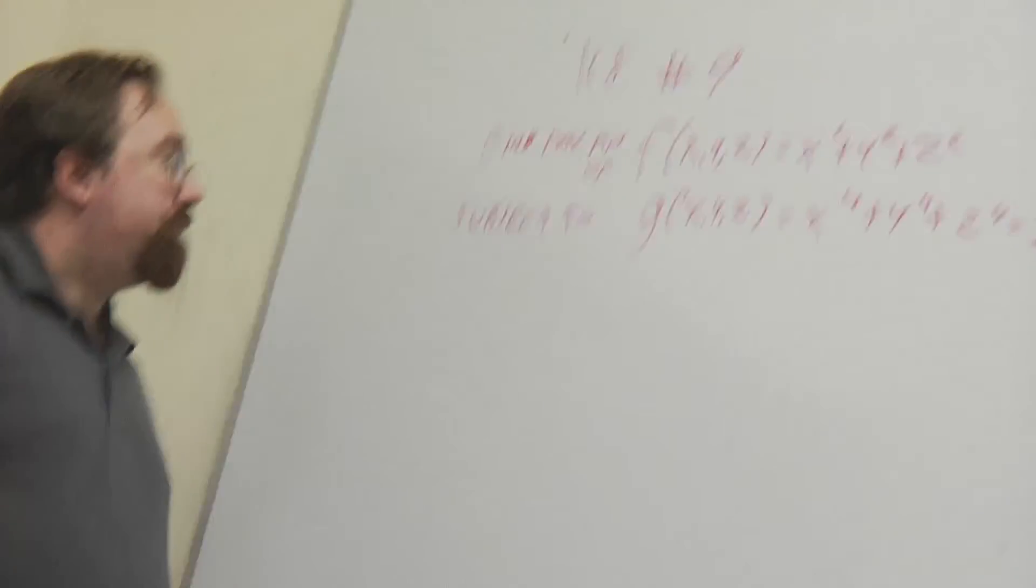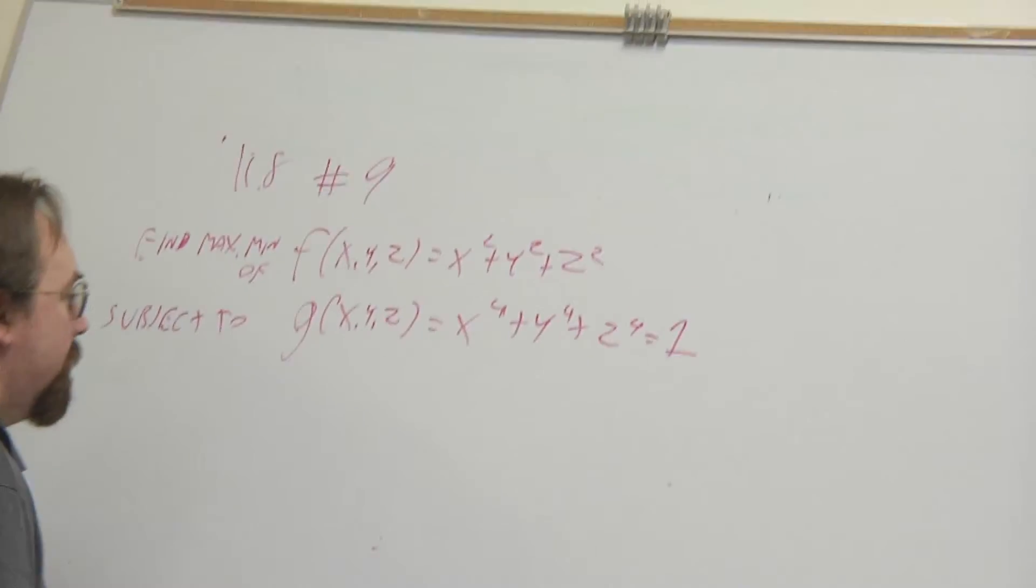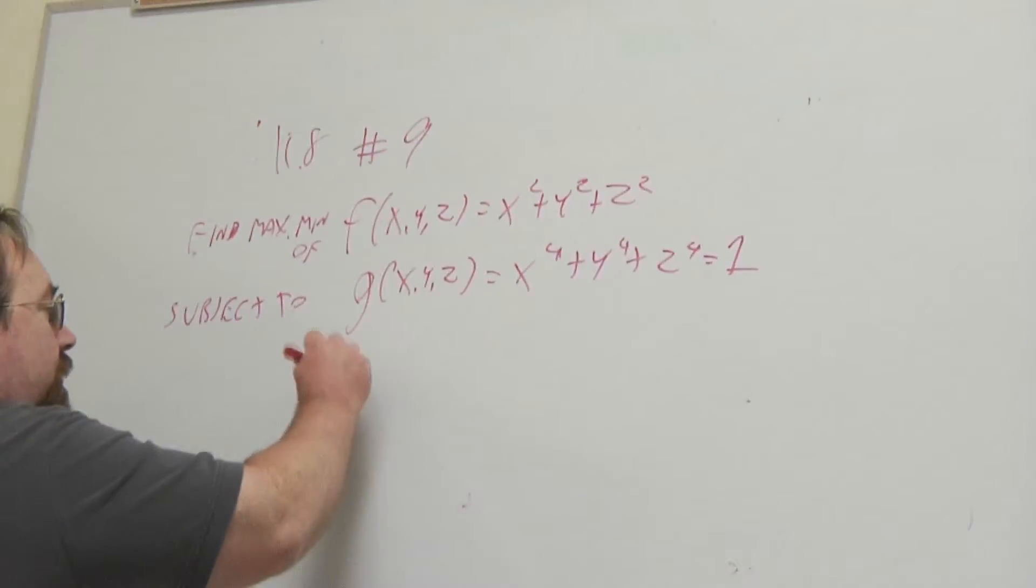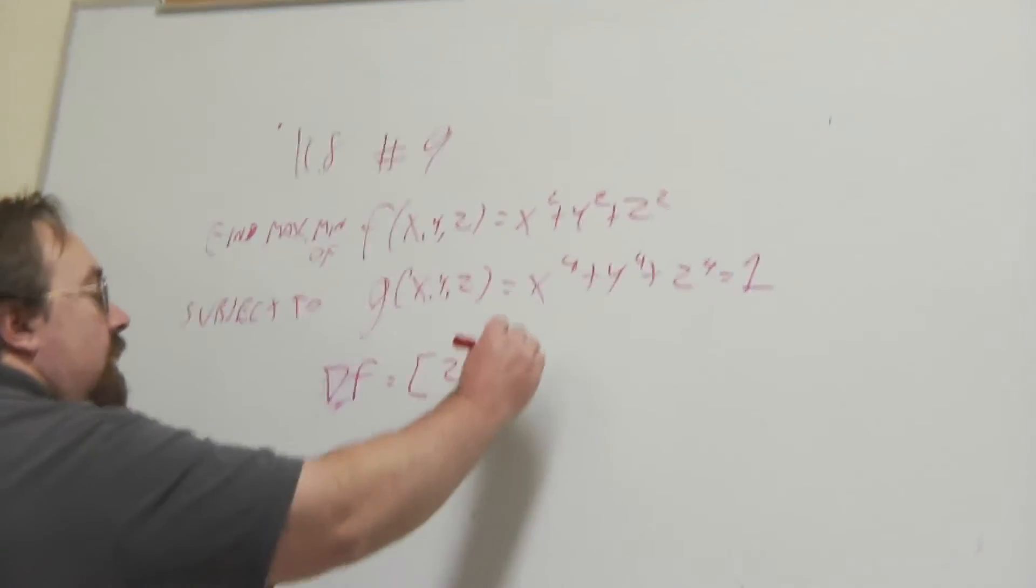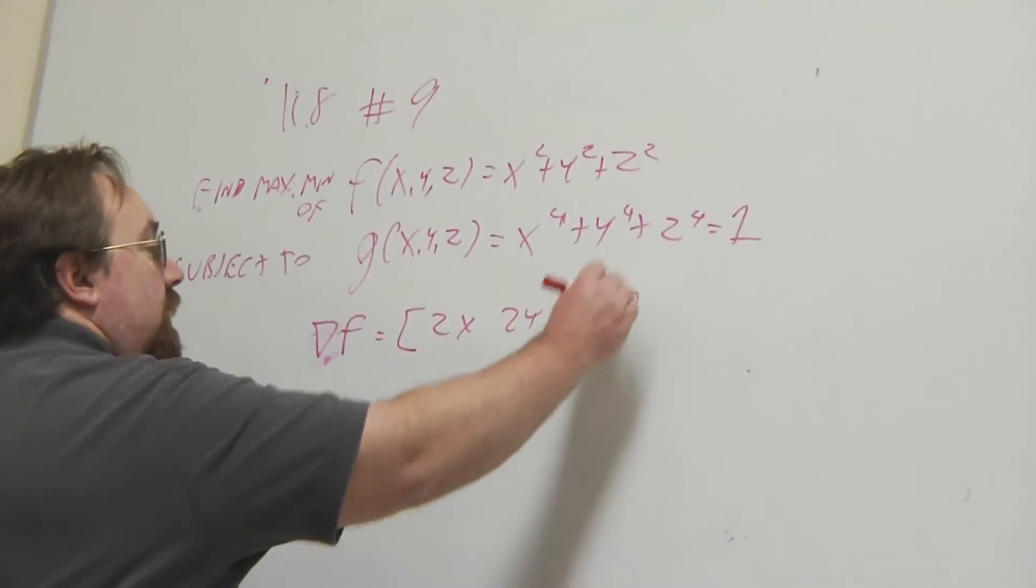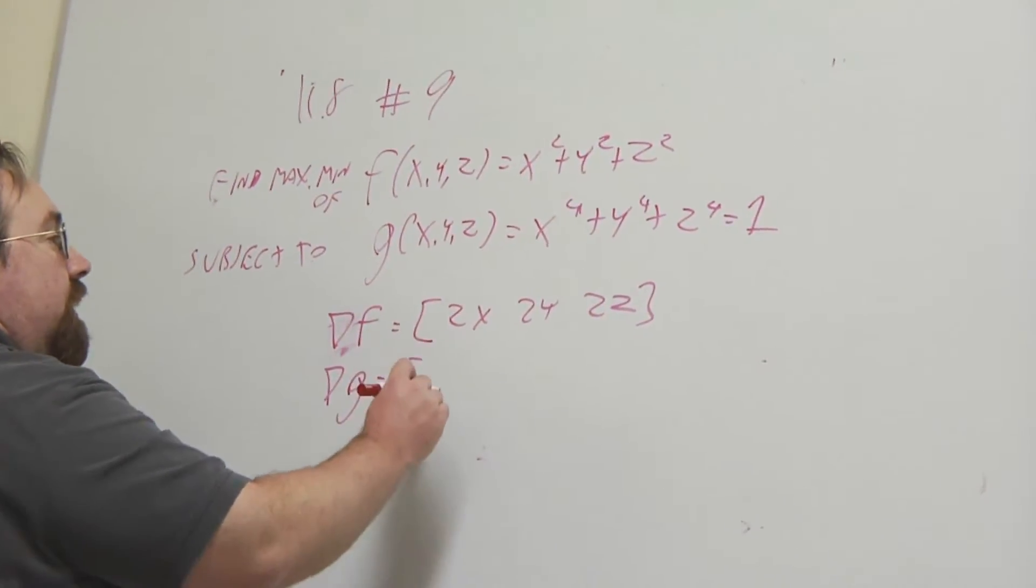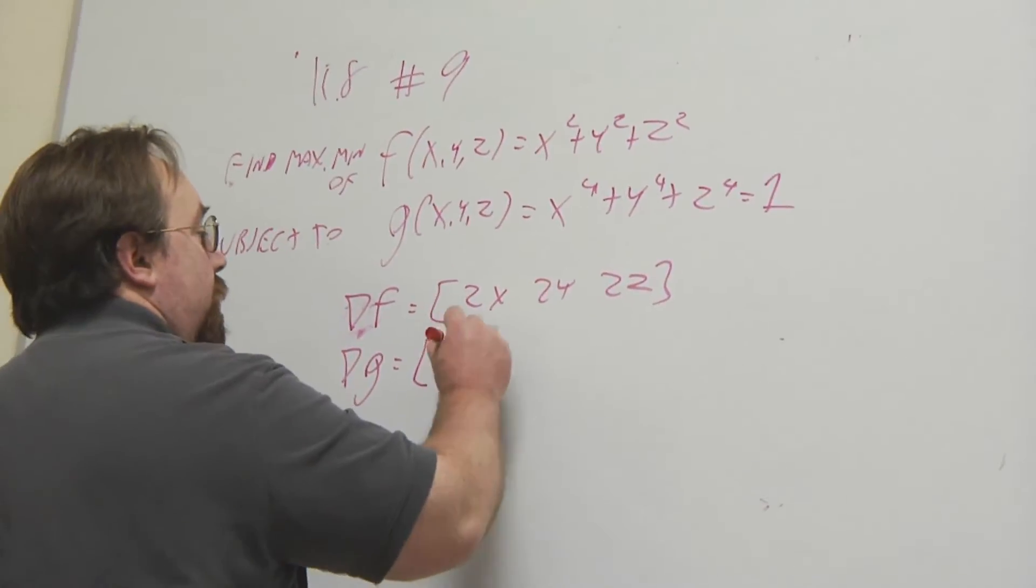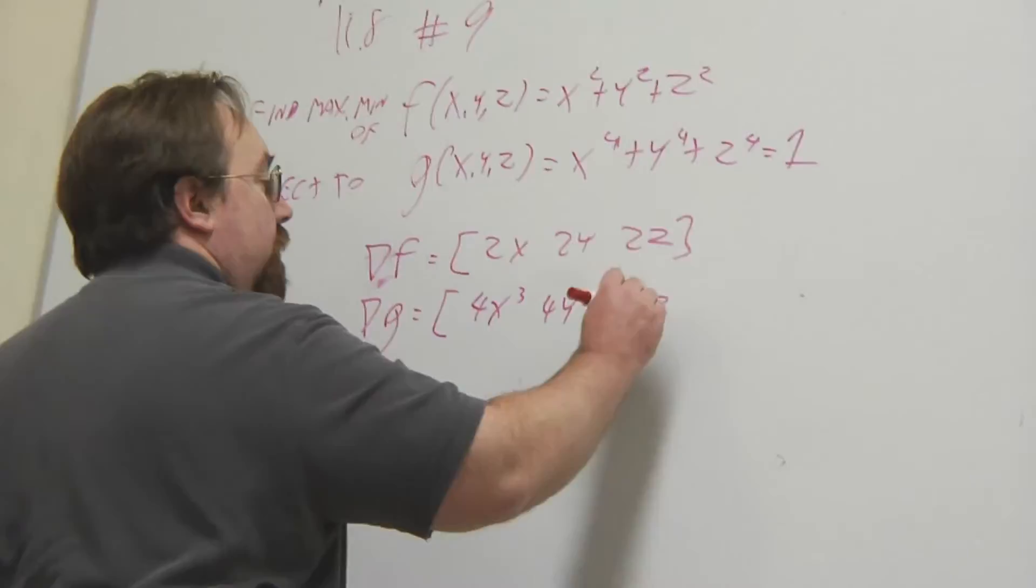Alright, so what you do is first you need the gradients of both. So, not much going on here, we have 2x, 2y, 2z. And then the gradient of g is going to be 4x cubed, 4y cubed, 4z cubed.